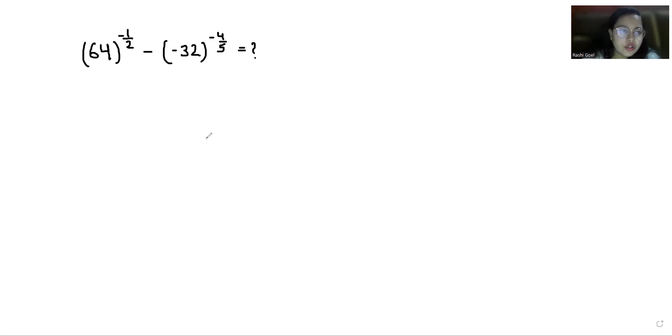So 64 we can write it as 8 square, whole power negative 1/2, minus negative 32 as 2 power 5, power minus 4/5. Now according to exponent rule, a power m power n is equals to a power mn.